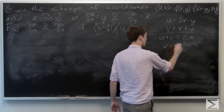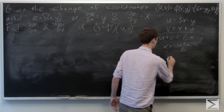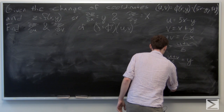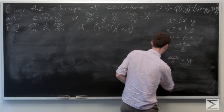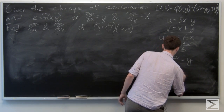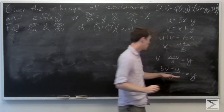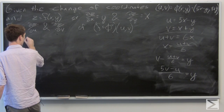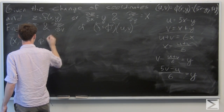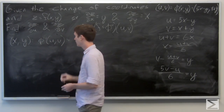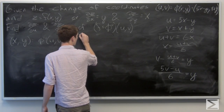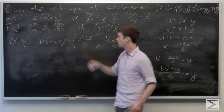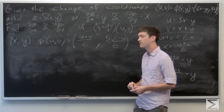Now we can plug in to the second equation for x. We get v minus x, which is (u plus v) over 6, equals y. We can simplify this a little bit: y equals (5v minus u) over 6. So our inverse function phi inverse of u, v has first component (u plus v) over 6.